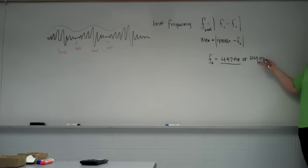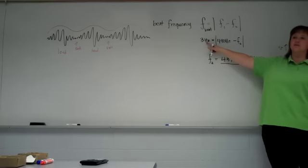If you had been 443 and tightened your string just a little bit, keep in mind tightening the string increases the velocity of the wave. The wavelength's set by the length of the string, so if velocity increases, then the frequency has to increase as well. By tightening the string, you're increasing the frequency. So if we had had 443 as our original frequency and tightened the string, our beat frequency would have gone up. We would have been even further away.